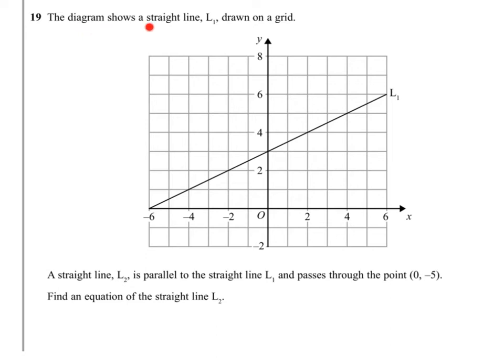Question 19. The diagram shows a straight line L1 drawn on a grid. A straight line L2 is parallel to L1 and passes through the point (0, -5). Find an equation of the straight line L2.